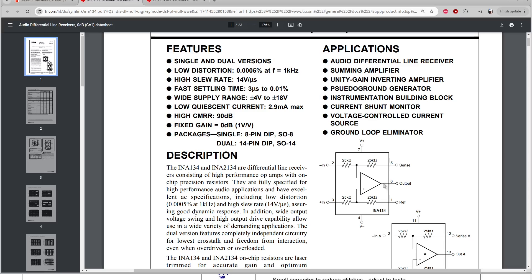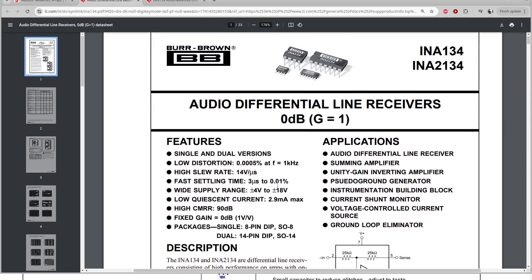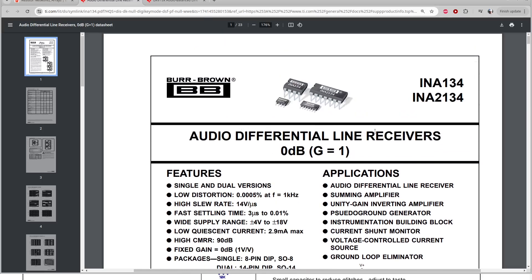In professional audio gear, you see these difference amps all over the place, handling the input signals from XLR connectors. That's such a common application that the manufacturers call them audio line receivers.